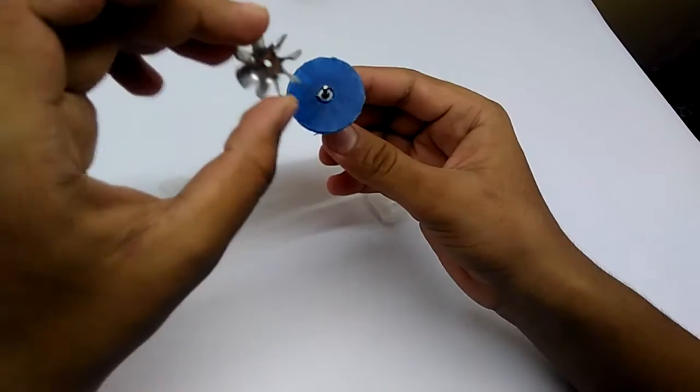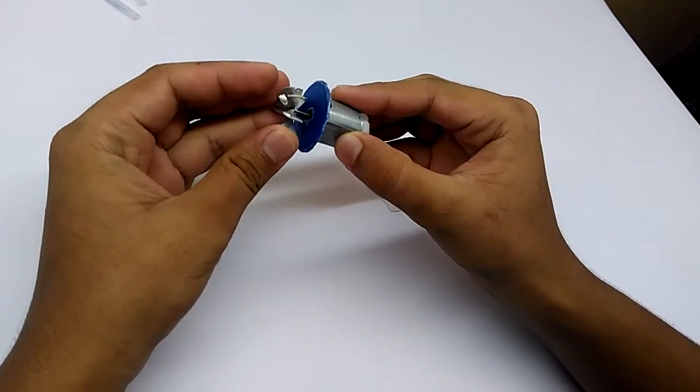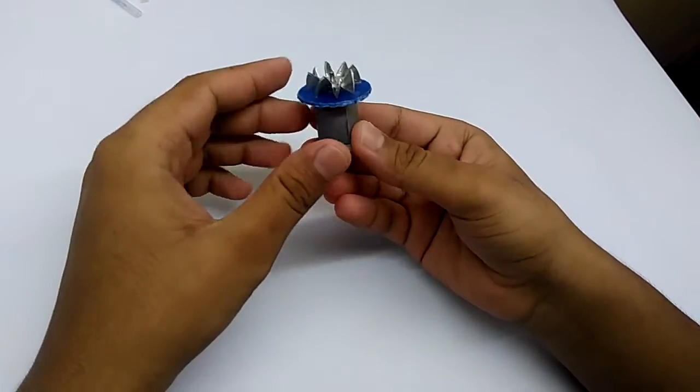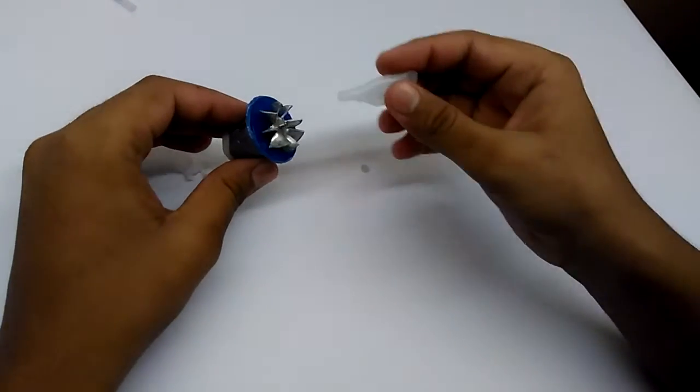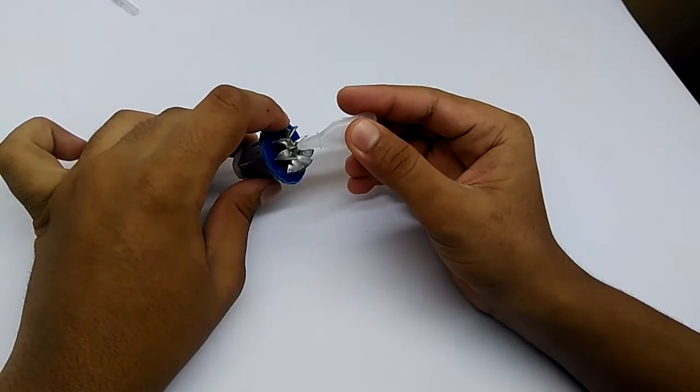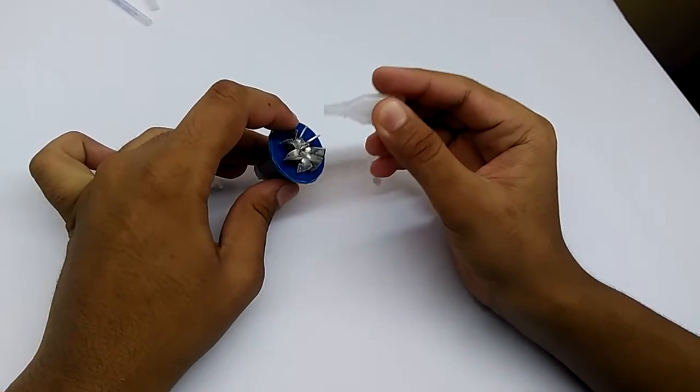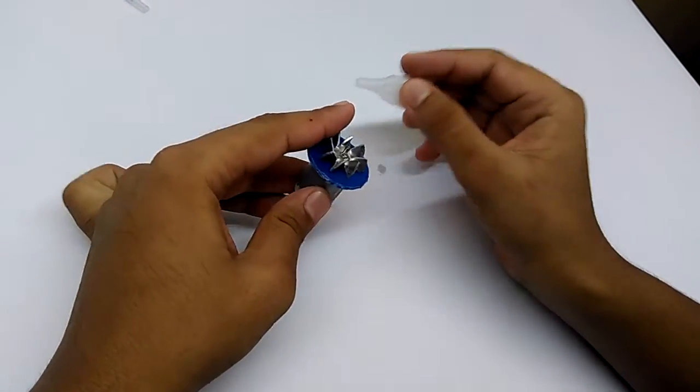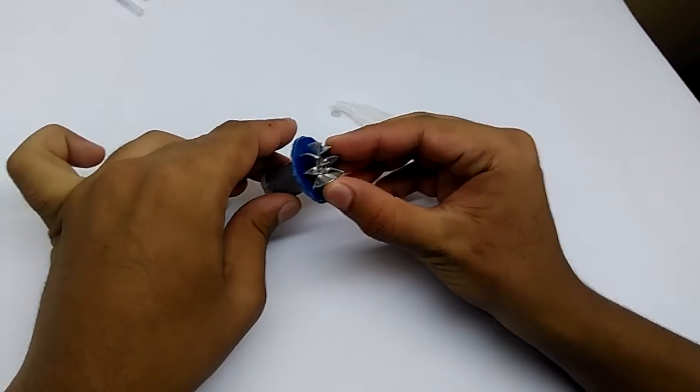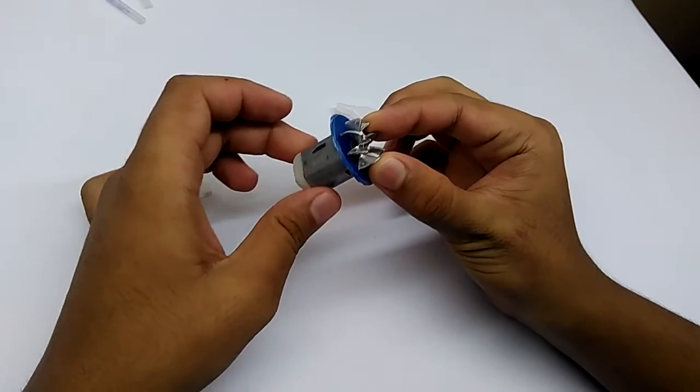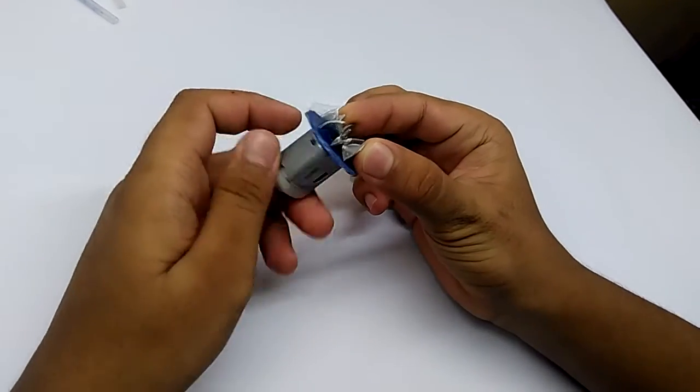I will take this blade, put it inside like this, and stick it with the super glue. It will pump the water. These blades will pump the water. Now I will keep it drying like this. Now it is stuck perfectly.